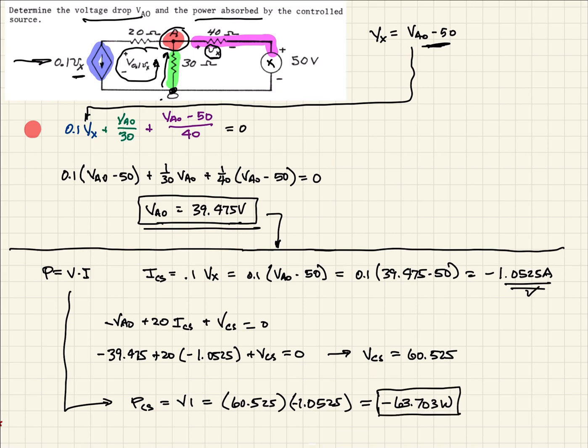So this is the power that is absorbed. So it's negative, so that's showing that it's absorbed by our current source. So again, voltage drop across the A0, first thing they ask for, and then the power absorbed by our dependent current source, negative 63.703.